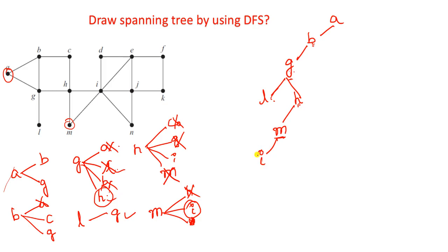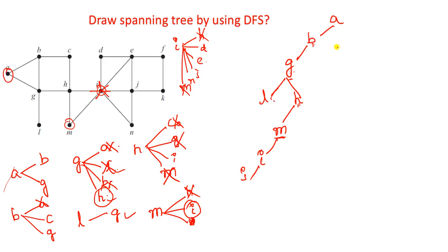Insert I. Explore I - I has six incident vertices: H, D, E, J, N, and M. H and M are already visited. D, E, J, N are not visited. We take J. Explore J - J has four incident vertices: E, K, N, and I. I is already visited. N, K, and E are not visited. We insert E as the next vertex.